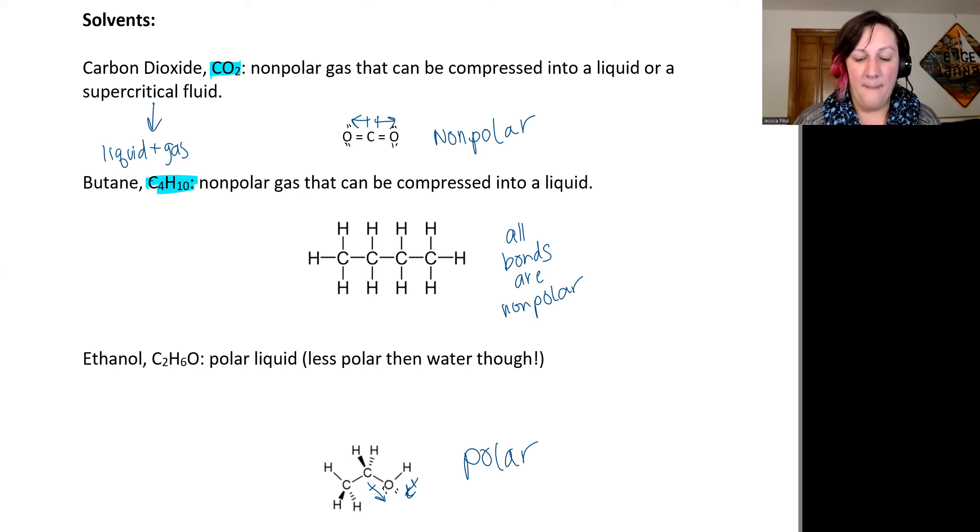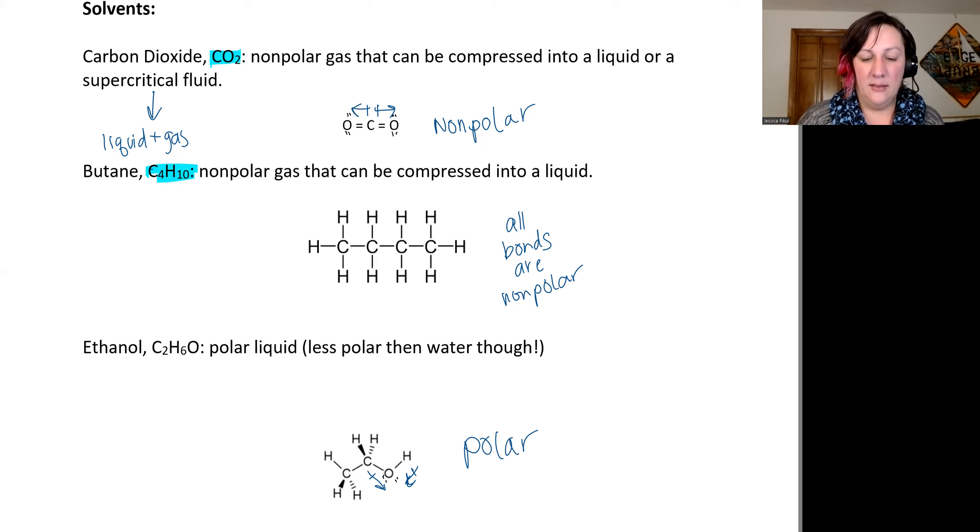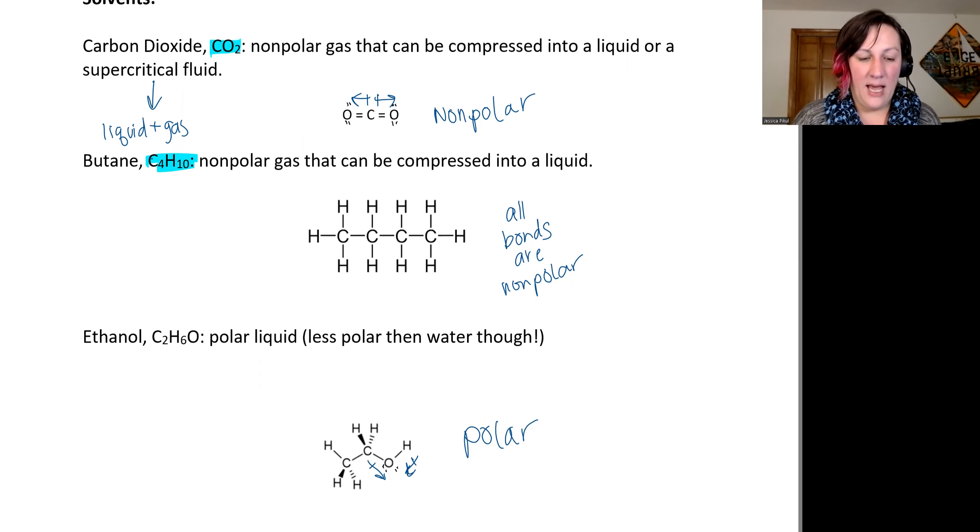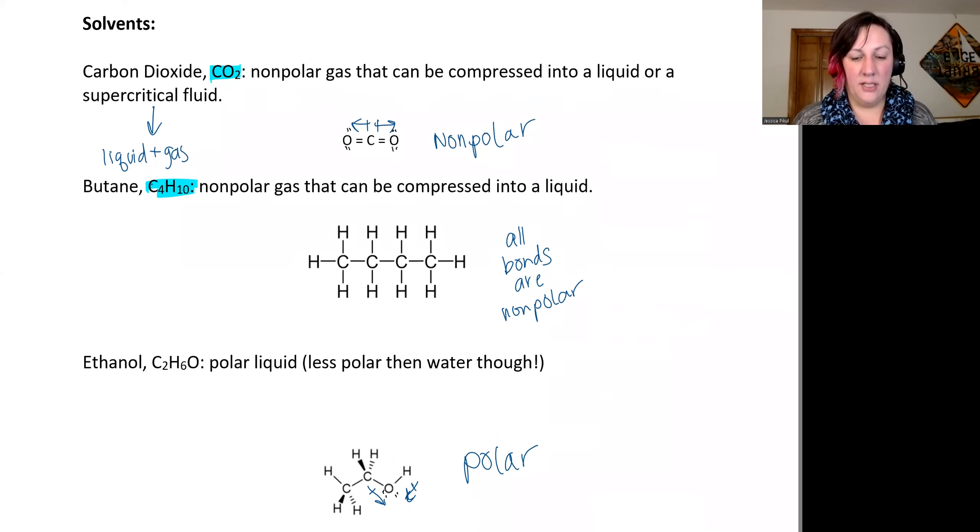So it's a perfect molecule for us to work with as a solvent. It is also small and it is a liquid at room temperature. It is not easily converted into a gas—that takes a bit more energy. So of all of these, we have a series of two nonpolar solvents and one polar solvent, and we're trying to extract out compounds that are for the most part nonpolar.